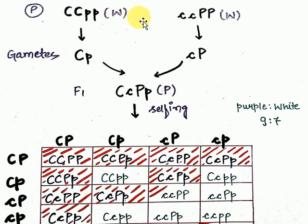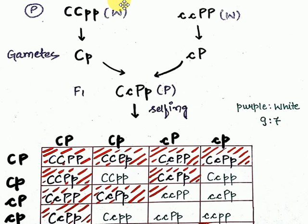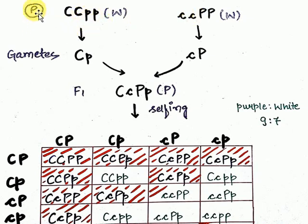Now let's talk about the cross. We are crossing two white plants. The first parent is CC pp — dominant for C but homozygous recessive for P — so there is no enzyme to convert raw material into anthocyanin, making it white. The second parent is cc PP — homozygous recessive for C — so there is no raw material for anthocyanin production. Both parents are white.